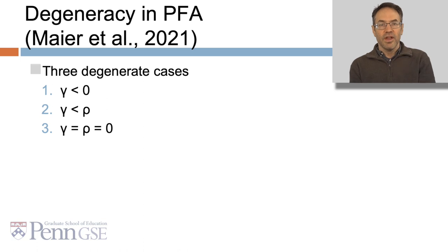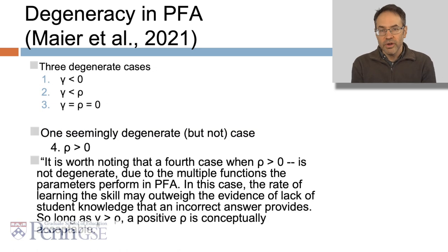Now, as in BKT, PFA can have degenerate models. And Meyer et al. 2021 talked about three degenerate cases that you can get, where gamma is less than zero, where gamma is less than rho, and where both gamma and rho equal zero. There's also a seemingly degenerate case that actually isn't, where rho is greater than zero. What might be happening is that the rate of learning the skill might be bigger than the evidence of lack of student knowledge that an incorrect answer provides.